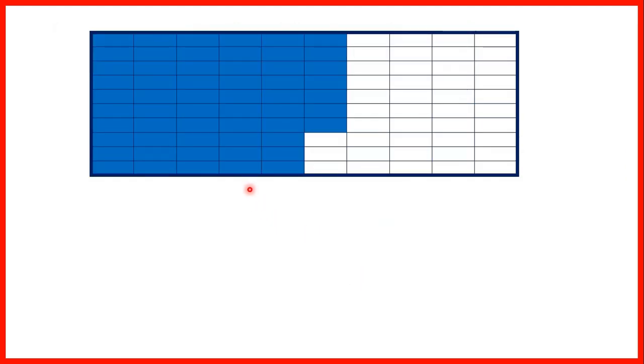So here, as a fraction, we have 57 hundredths. As a decimal, we have 0.57, and as a percentage, we have 57 percent.